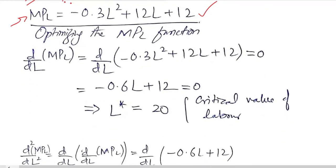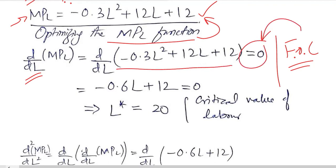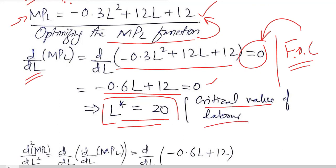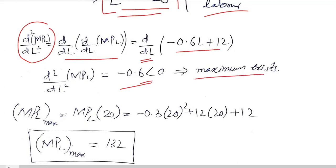Now the optimization process begins. We take the first derivative of the marginal product of labor function for the first order condition and set it equal to 0. Solving for labor gives us the critical value. For the second order condition, we take the second derivative of the first order derivative, which equals minus 0.6 — less than 0 — confirming we have a maximum.